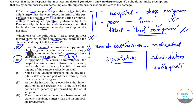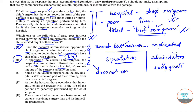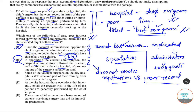Option B says: in appointing the current chief surgeon, the hospital administrators followed the practice well established at city hospital of promoting one of the surgeons already on staff. However, how he was appointed actually does not resolve the discrepancy that lies between the chief surgeon's reputation versus his poor record. So it does not give us any information as to why these two things are happening simultaneously. So again, we have to reject B.